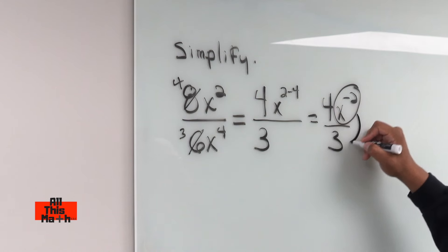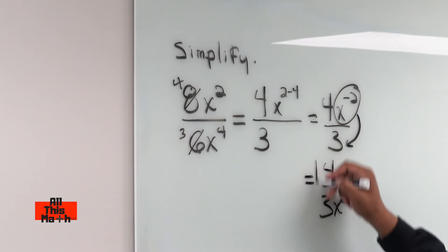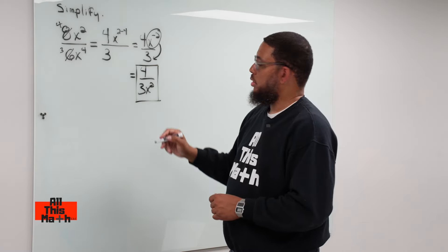So the x is going to go down to the denominator, and then our final answer is going to be 4 over 3 x squared. And that's today's lesson.